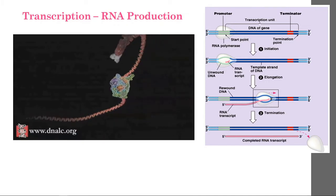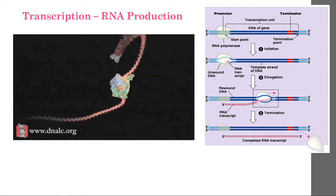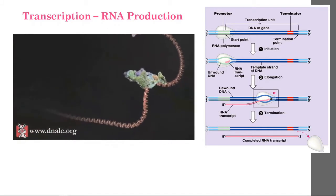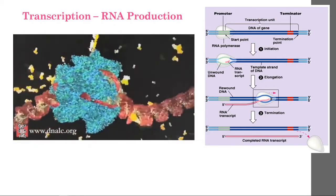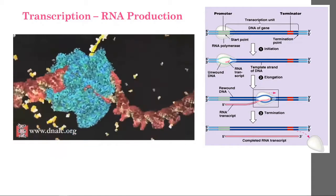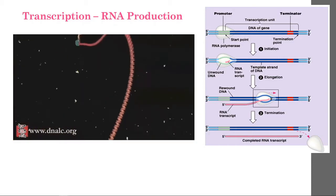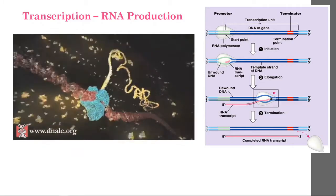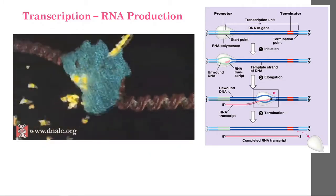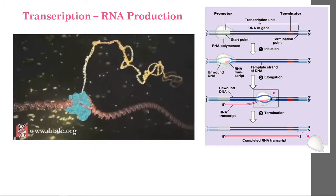The initiation complex requires contact with activator proteins, which bind to specific sequences of DNA known as enhancer regions. These regions may be thousands of base pairs distant from the start of the gene. Contact between the activator proteins and the initiation complex releases the copying mechanism. The RNA polymerase unzips a small portion of the DNA helix, exposing the bases on each strand. Only one of the strands is copied, acting as a template for the synthesis of an RNA molecule assembled one subunit at a time. The subunits enter the enzyme through its intake hole and are joined together to form the long messenger RNA chain.